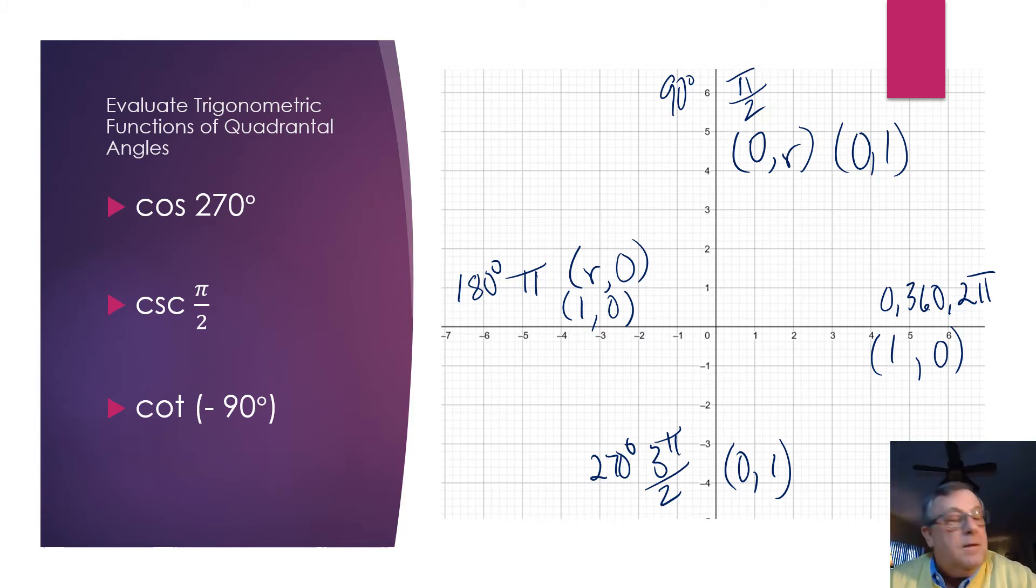Well, then what is the cosine at 270 degrees? And again, our cosine, we can say, is our x-coordinate. Well, at 270 degrees, our cosine is 0.